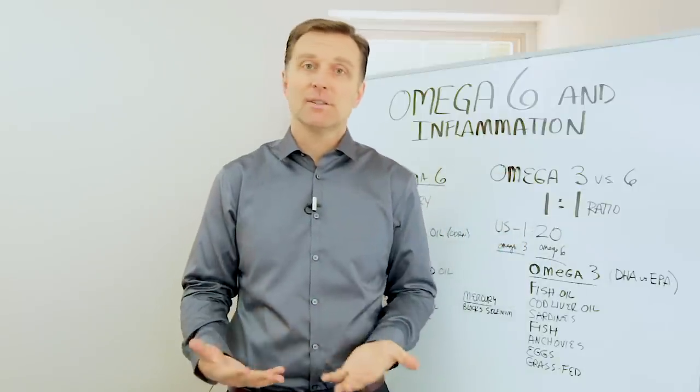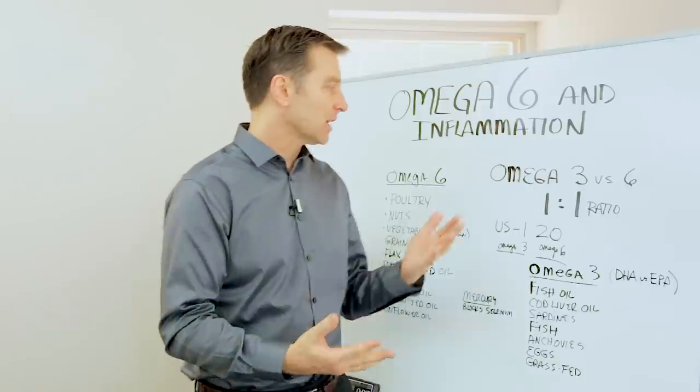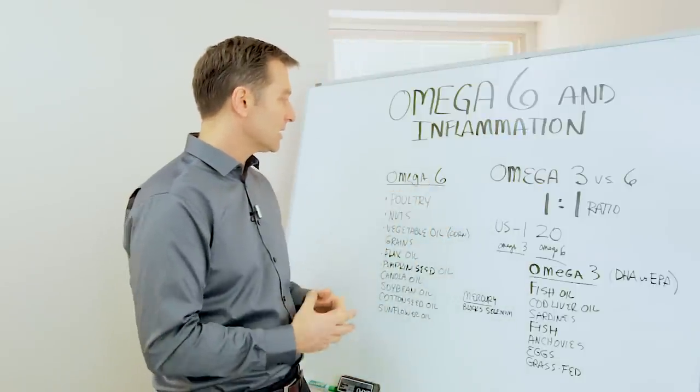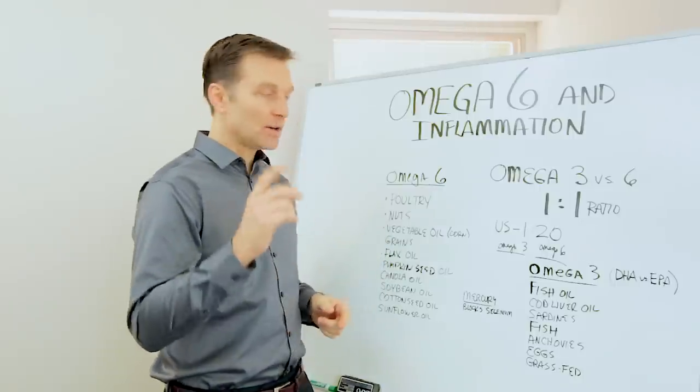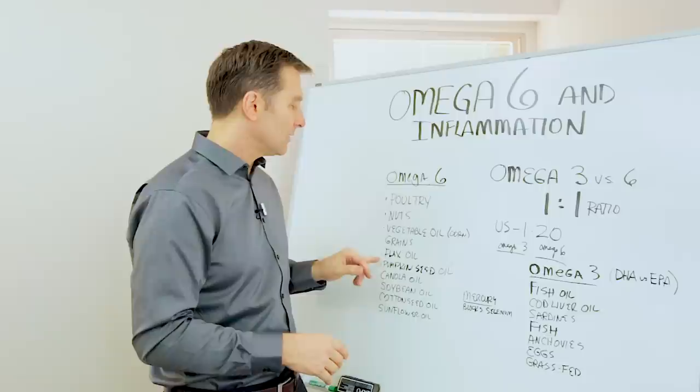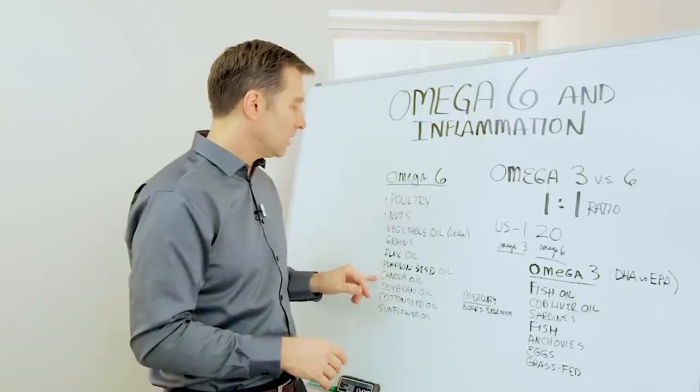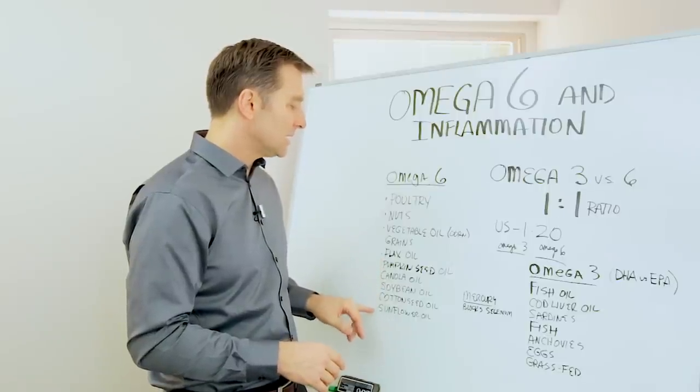And what does that mean? It tells us what we need to be eating. These are the omega-6 fatty acid foods: poultry, nuts, vegetable oils like corn oil, grains, flax oil, pumpkin seed oil, canola, soybean, cottonseed, sunflower.